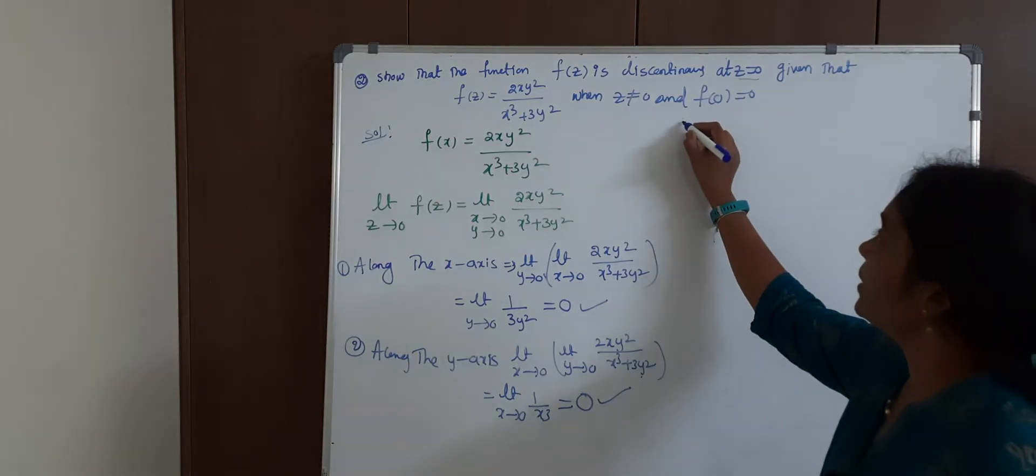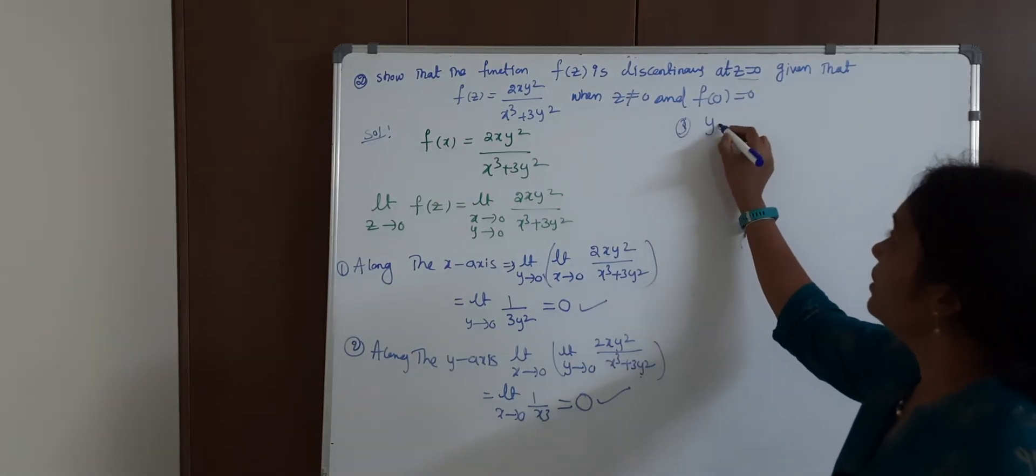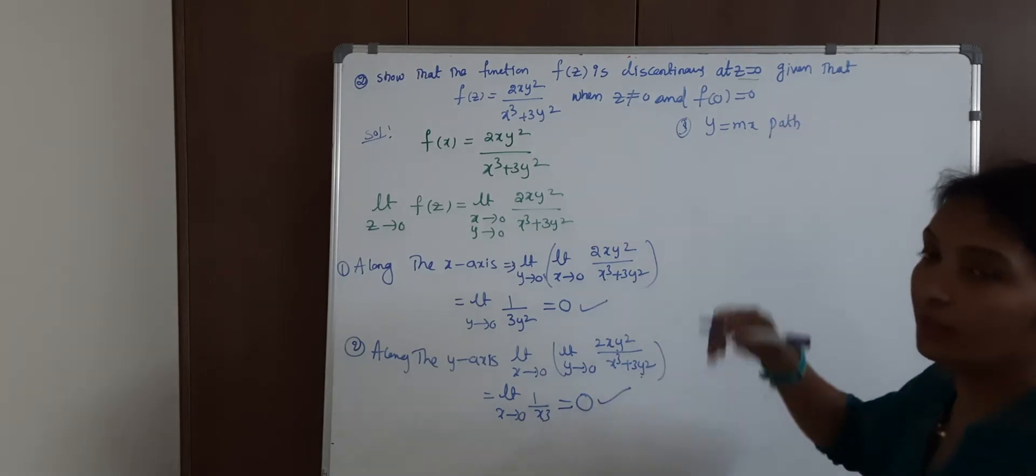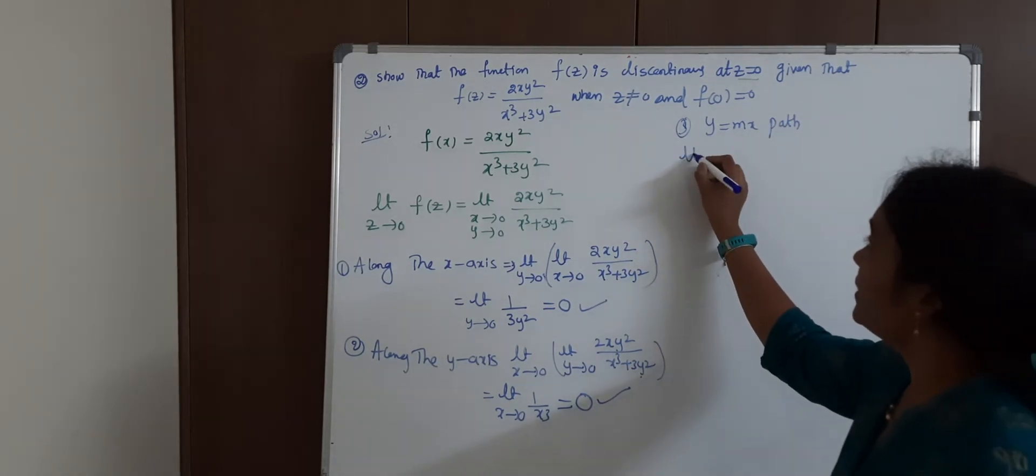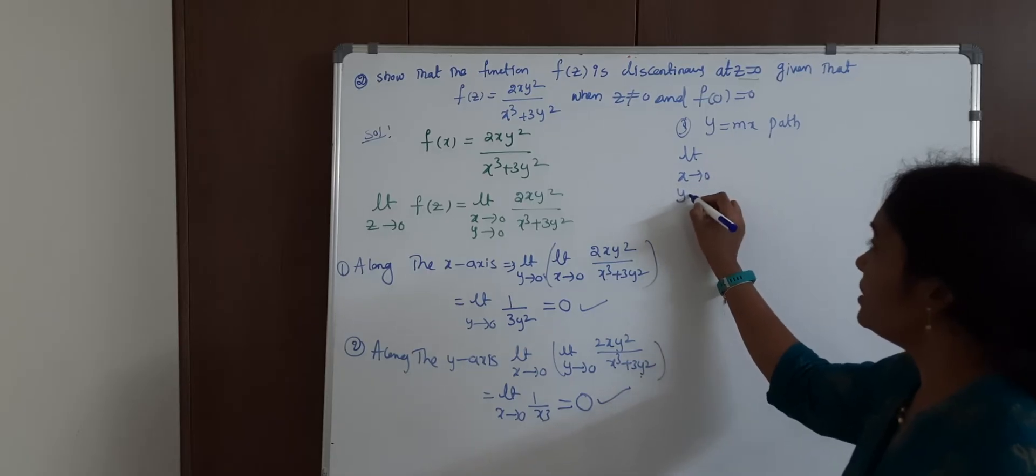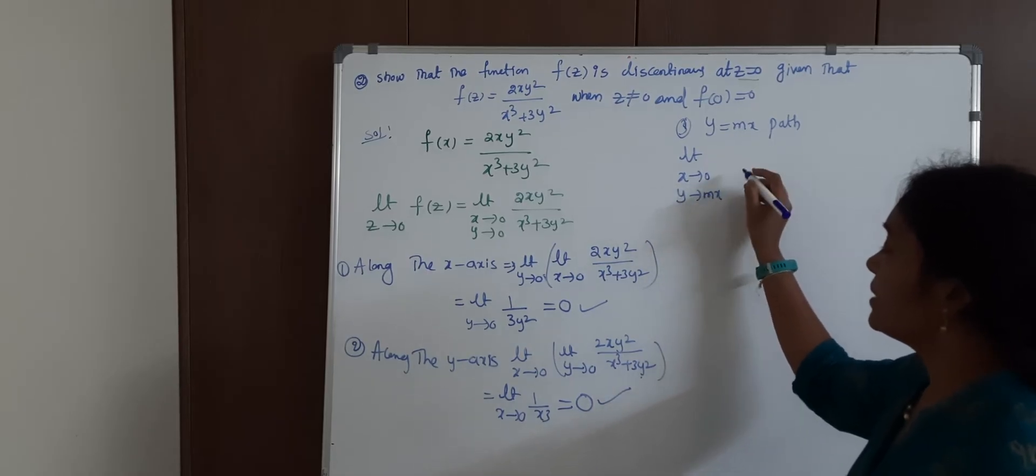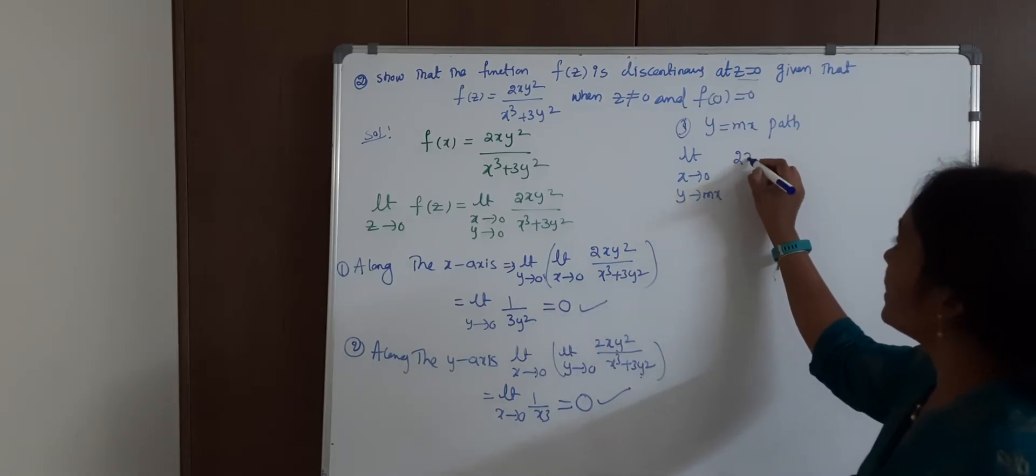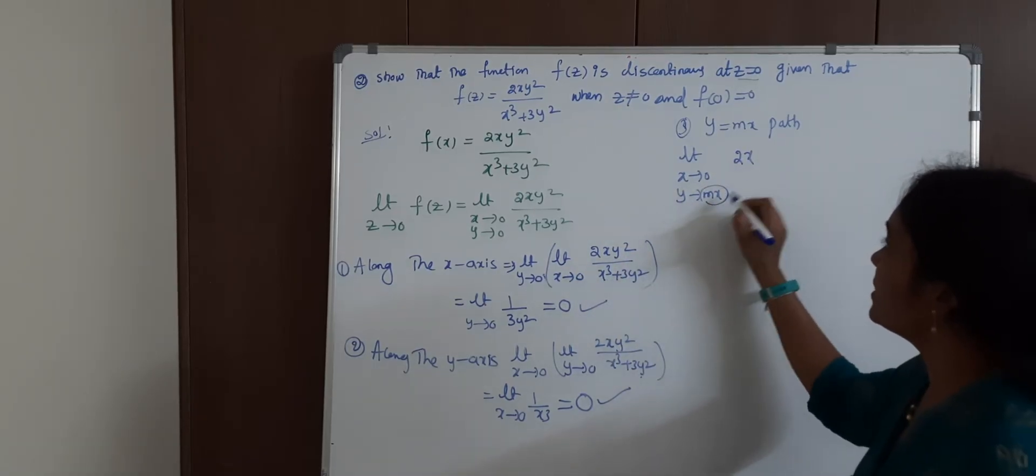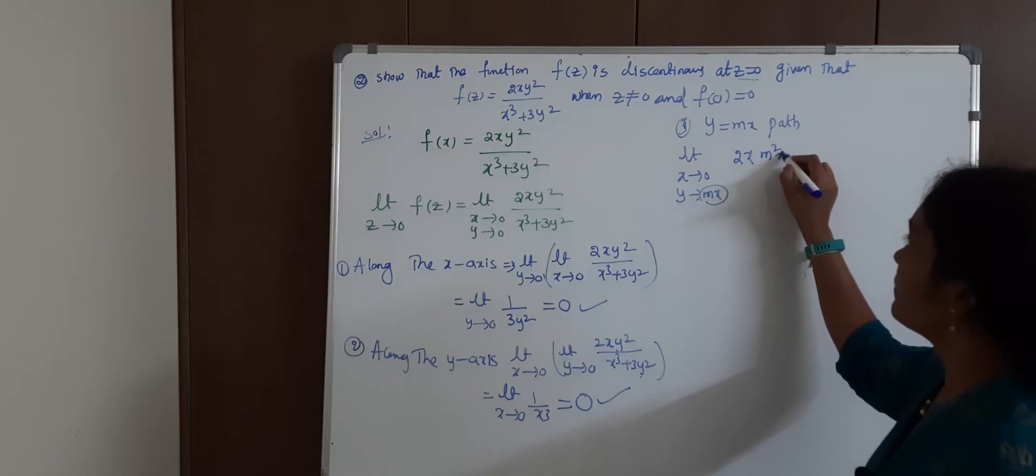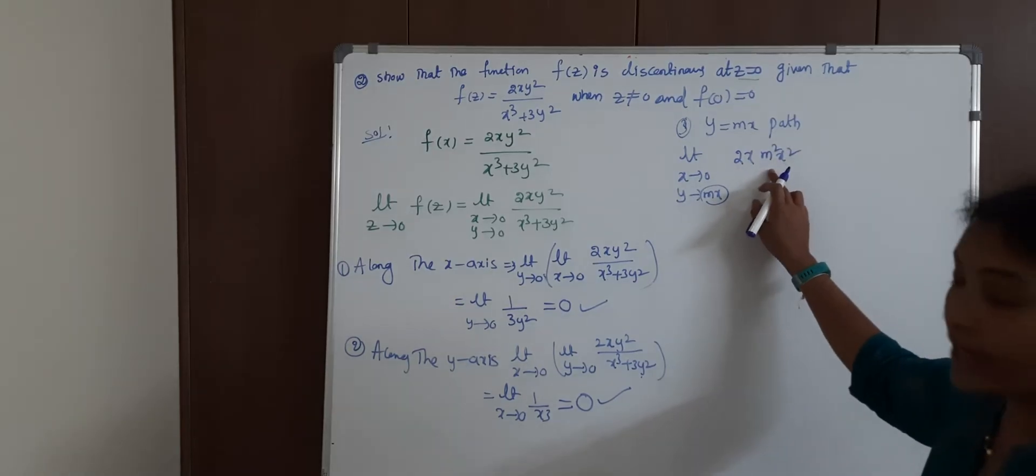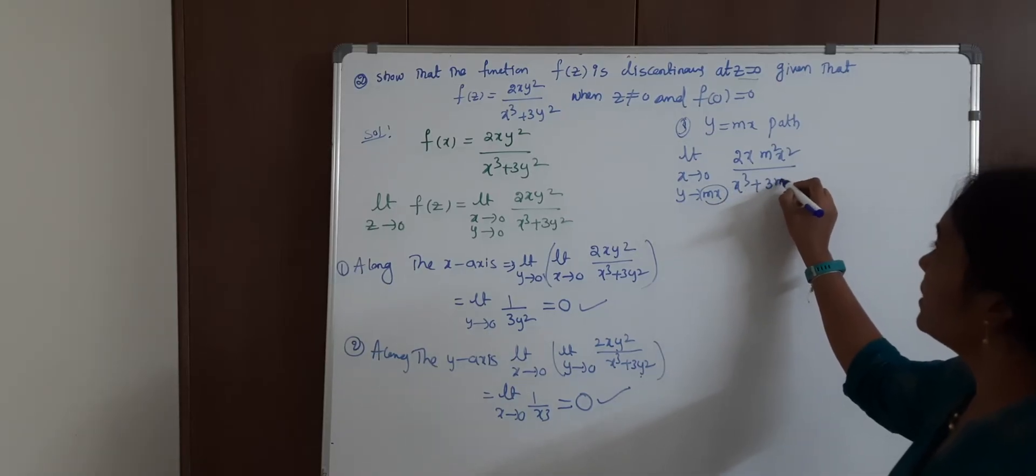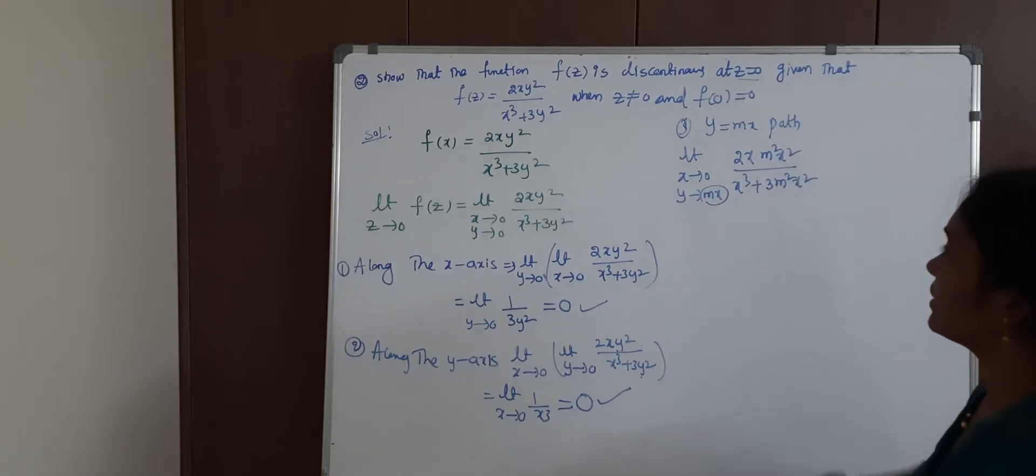Then, what about y=mx path? You need to write limit x→0, but y will change to mx. Then it becomes 2x(mx)² = 2m²x³ / (x³ + 3m²x²). Right?